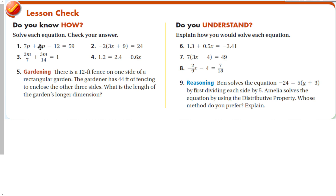Our lesson check: solve each equation and check your answer. My first step on the first one would be to combine the 7p and the 8p, add 12, then divide by 15. For the next one, find a common factor or multiply both sides by 14. For the third one, I could choose to either distribute or divide out the negative 2. And for number 4, I can choose to solve with a calculator or multiply the whole equation by 10, because there's one decimal behind the decimal point.